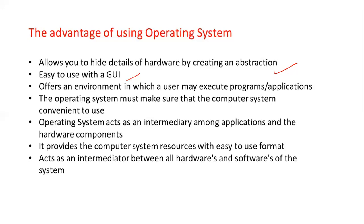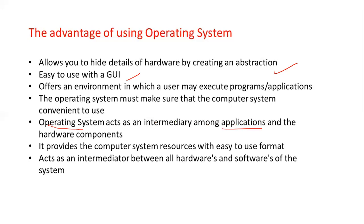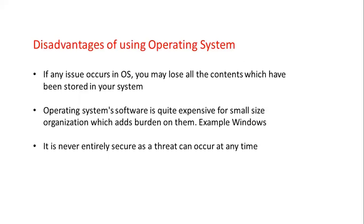Are you able to use your operating system conveniently? Obviously yes — whether it's mobile phones or computers, we use everything conveniently because the operating system ensures the computer system is convenient to use. The operating system acts as an intermediary among applications and hardware components — it acts as an interface between the software applications and the hardware. It provides computer system resources in easy-to-use formats and acts as an intermediate between all hardware and software of the system.